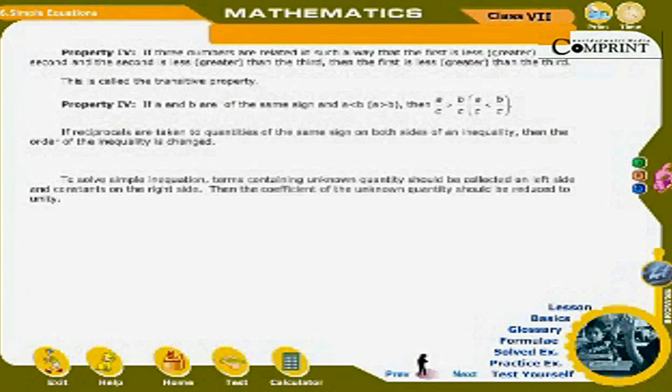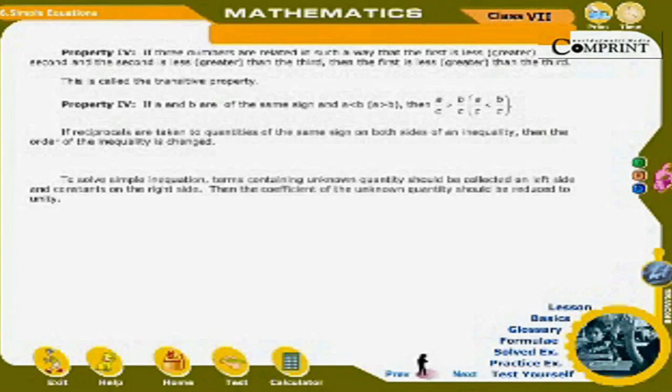Property 4 (Transitive property of inequality): If three numbers are related such that the first is less than or greater than the second, and the second is less than or greater than the third, then the first is less than or greater than the third. Additionally, if A and B are of the same sign and A < B or A > B, then A ÷ C > B ÷ C or A ÷ C < B ÷ C. If reciprocals are taken of quantities of the same sign on both sides of an inequality, the order of the inequality is changed. To solve simple inequations, collect unknown terms on the left side, constants on the right, then reduce the coefficient of the unknown to unity.